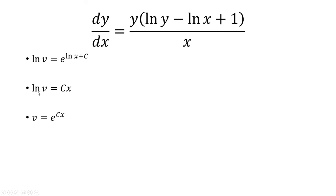So again here we do e to both sides. We have v is equal to e to the cx. And then we do a substitution. We have let v equal y over x.